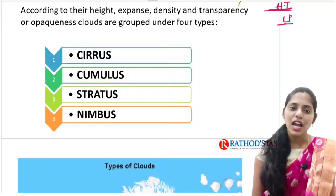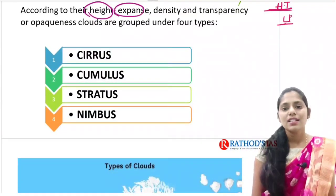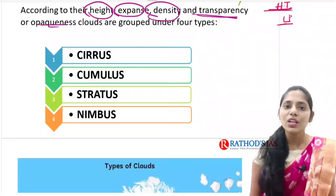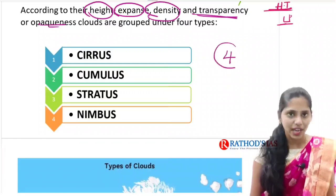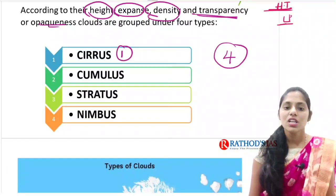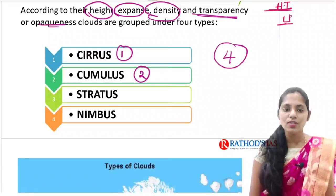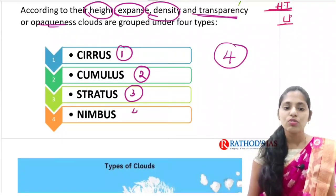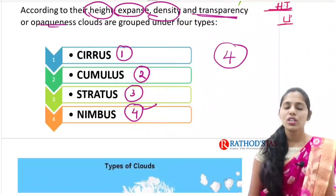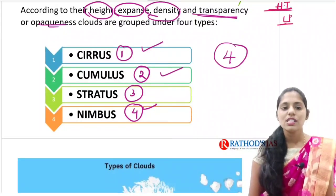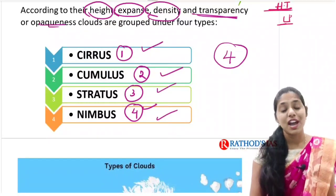Based on height, expanse, density, transparency, and opaqueness, we are mainly grouping clouds into four types. The first one is cirrus clouds, second is cumulus clouds, third is stratus clouds, and fourth is nimbus. You have to make a note of these four types: cirrus, cumulus, stratus, and nimbus.